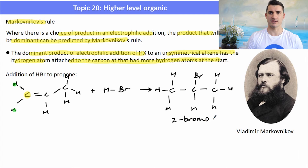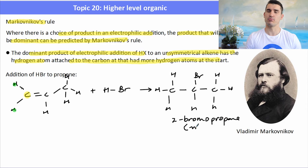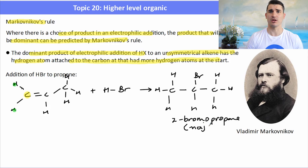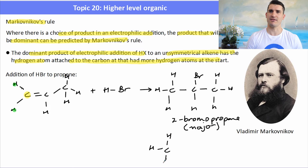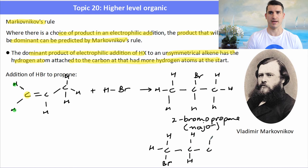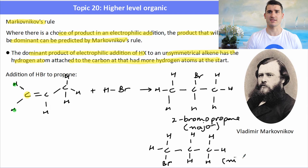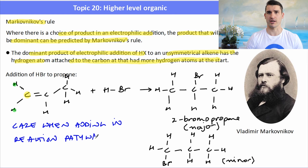The minor product would be the other isomer, where the bromine is on the first carbon — that's 1-bromopropane — and it occurs in a much lower percentage of cases, so the yield is quite small. You need to be really careful of this when doing reaction pathways, because you need the major product, not the minor product.